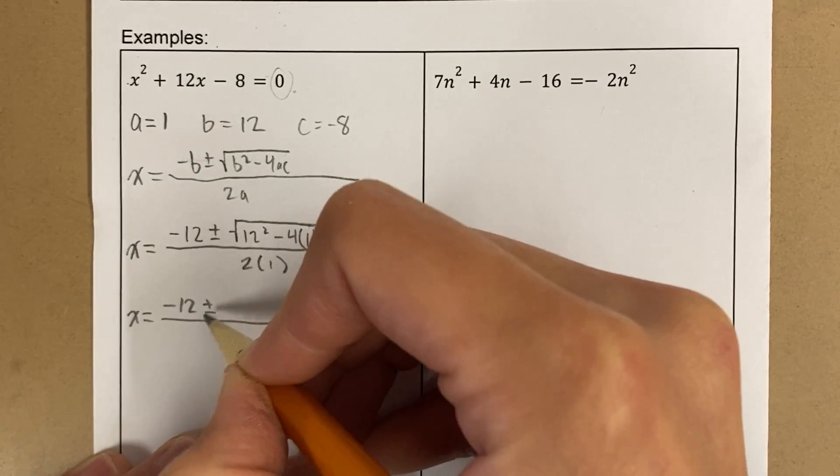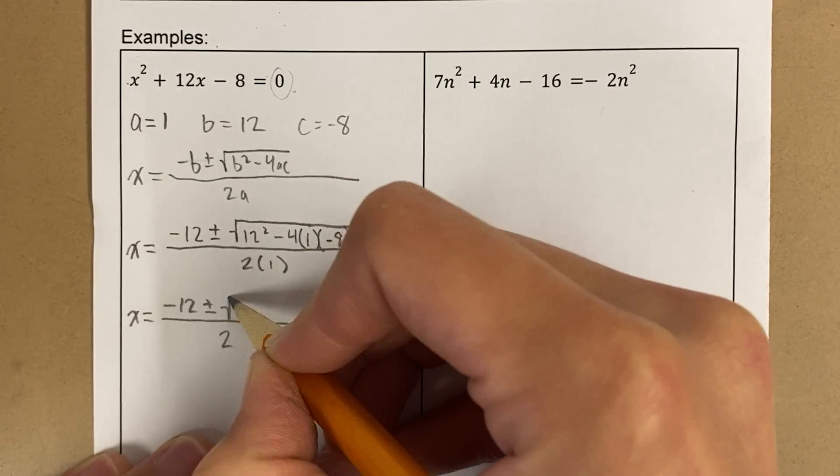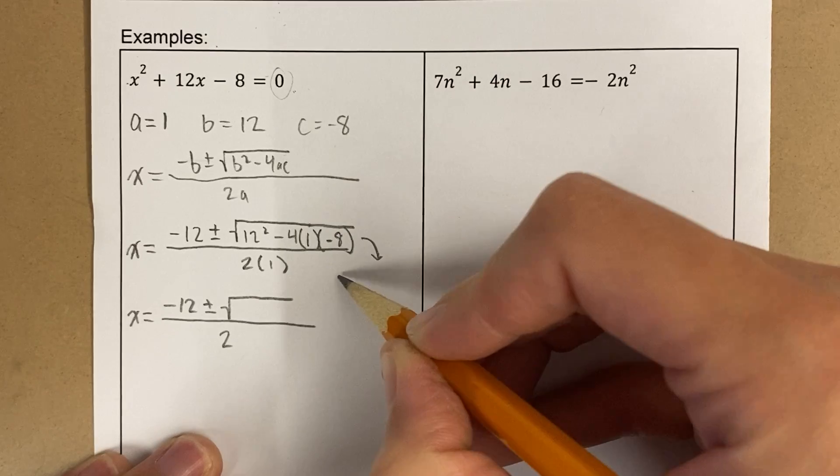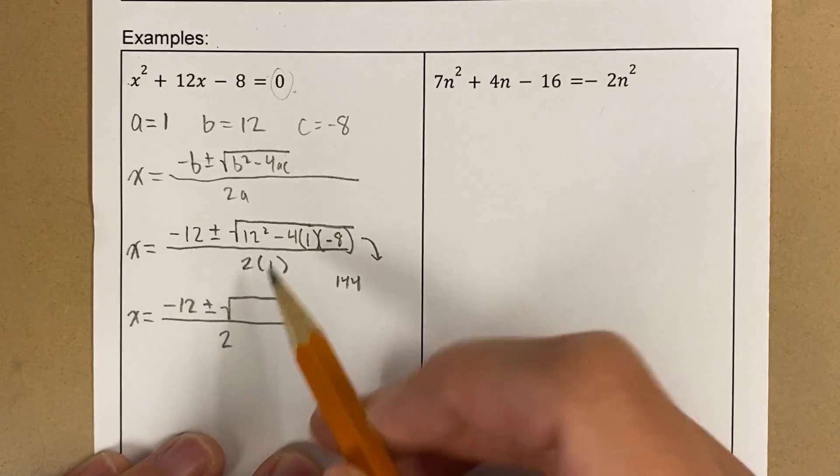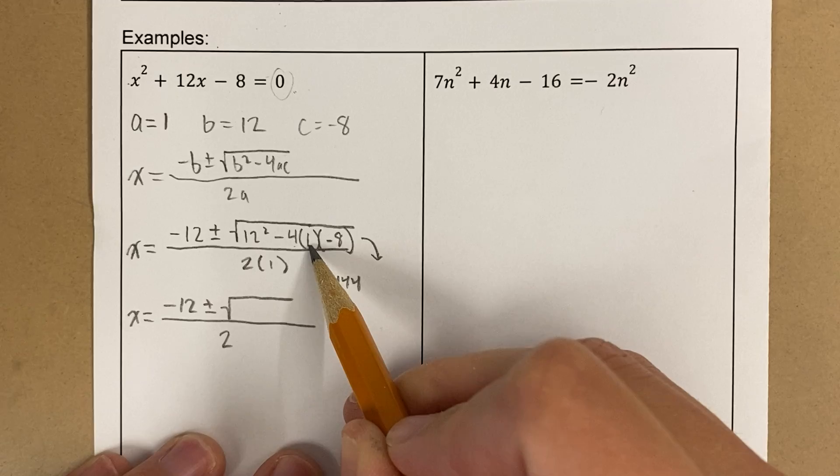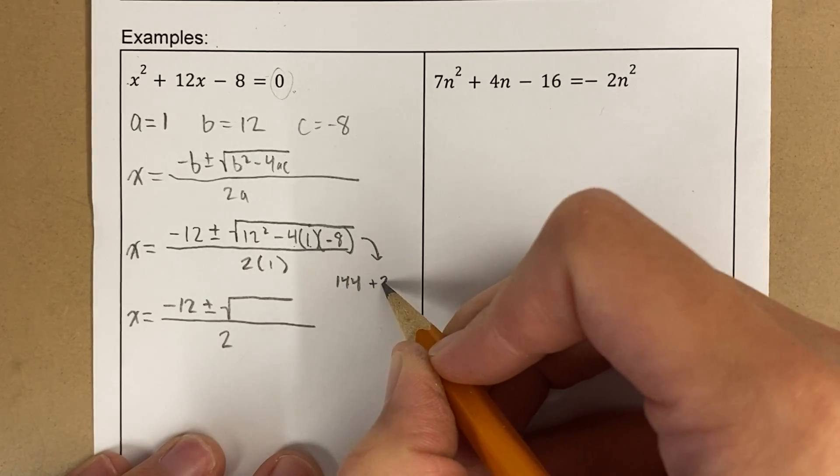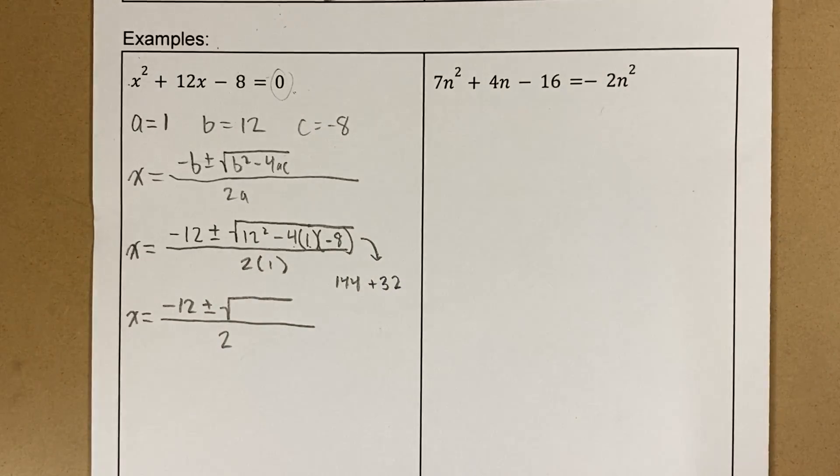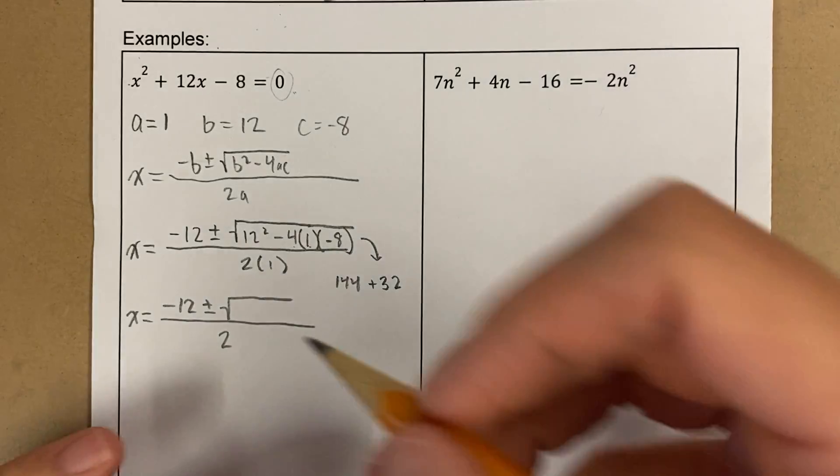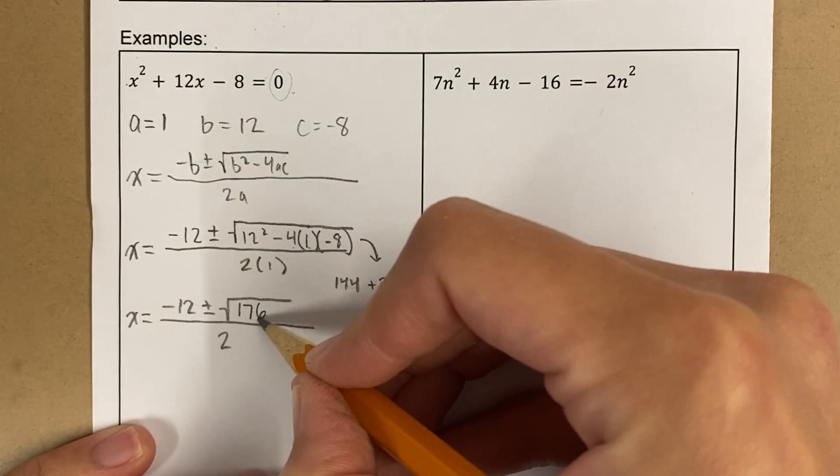Okay, and this is negative 12 plus or minus. On the bottom, I have a 2, and let's simplify this. 12 squared is 144, and then negative 4 times positive 1 is negative 4 times negative 8. This is plus 32. Okay, now 144 plus 32 is 176.